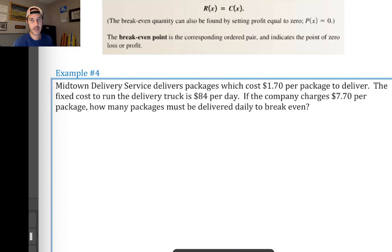The last example for this section says that the Midtown Delivery Service delivers packages which cost $1.70 per package to deliver. And the fixed cost to run the delivery truck is $84 per day. If the company charges $7.70 per package, so that's like if I'm sending a package to someone else, this company is going to charge me $7.70 to deliver it. How many packages must be delivered daily in order to break even?